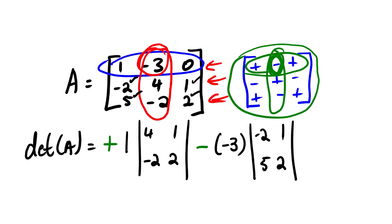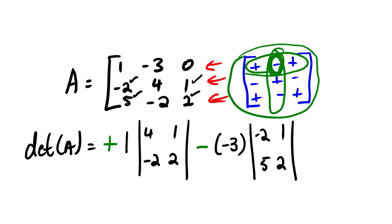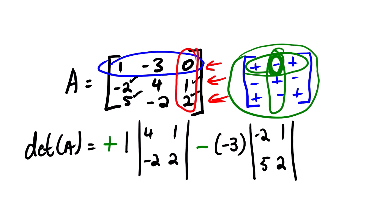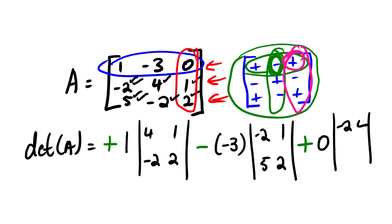We are done with the second element in row number one. We go to the last one. The last element is zero. Looking at the sign table again, we can see that our zero will be positive, since we are at row one, column three. So we have positive zero, then we open up a matrix with negative two, four, five, and negative two.